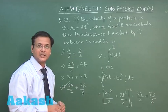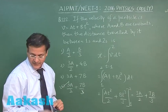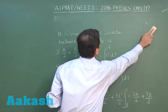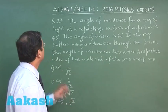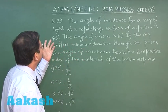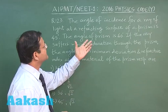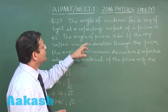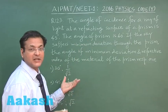Now let us look at next question, that is question 123. In this question 123 which is based on prism, it says that the angle of incidence for a ray of light at a refracting surface of a prism is 45 degree. This is angle of incidence. The angle of prism is 60 degree, equilateral triangle.